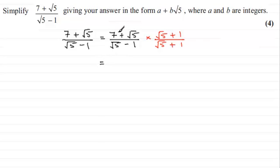Think of this as one bracket multiplied by another. So 7 × √5 = 7√5, then 7 × 1 = 7, then √5 × √5 = √25 = 5, and finally √5 × 1 = √5.